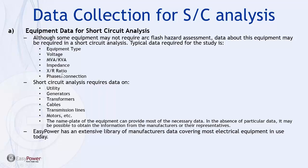Most of this on larger equipment will be on a nameplate. Short-circuit analysis requires data from utility connections, generators, transformers, cables, transmission lines, and motors. The nameplate of the equipment can usually provide most of the necessary data. If you're missing something specific, you can usually get that from a manufacturer's data sheet. In some cases, the tools can help connect the dots based on what you have, given the extensive library in the EasyPower tool suite.